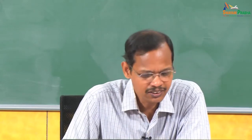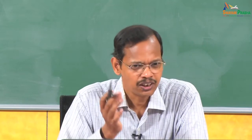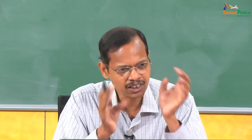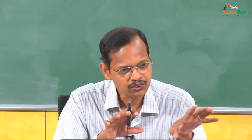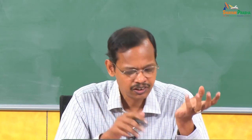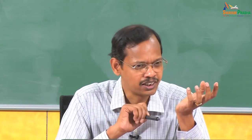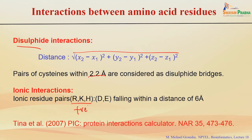Then you can see the ionic interactions. What is ionic interaction? Coulomb's law — it is the attractive interaction between two charged residues: one positive charge and one negative charge. What are the positively charged residues in a protein? Arginine, lysine, and histidine. What are the negatively charged residues? Aspartate and glutamate. Then you check for any pairs within the limit of 6 Ångström.